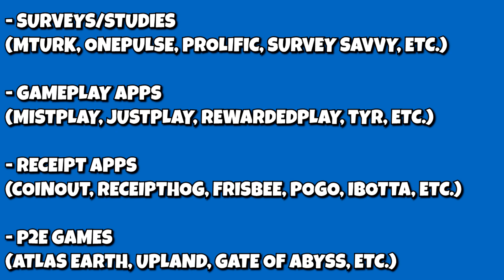Gameplay apps like Misplay and Rewarded Play that offer money for achieving milestones or a particular amount of time in a game. Mostly they involve mobile apps, about 99% of the time. The only time it's not is usually when the mobile app also has a browser version like Raid Shadow Legends, just as an example. Receipt apps like Receipt Hog, CoinOut, and Frisbee that offer money for taking pictures of receipts, as well as their auto counterparts like Pogo, Fetch, Ibotta, and Bridge Money.